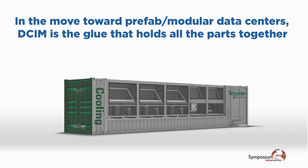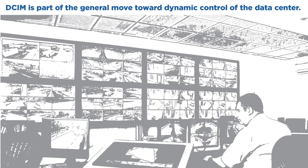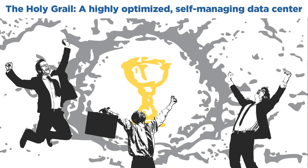DCIM has the potential to be the operating system of the future data center. Very allied to this, the third area we're interested in is this general move towards more dynamic control and, ultimately, automatic or autonomic systems. At 451, we see the end result — the holy grail — as a data center able to optimize and become self-managing, rather like an airliner might in flight, where almost everything that moves is registered, logged, and picked up by sensors, with a high degree of optimization going on.